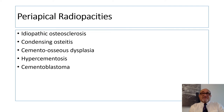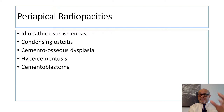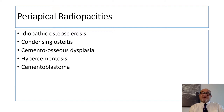Periapical radio opacities can be roughly categorized into: idiopathic osteosclerosis or condensing osteitis, or one of the different categories of cemento-osseous lesions. If you see a radio opacity connected to or around the tooth, most likely it will fall into one of these categories according to the clinical situation.